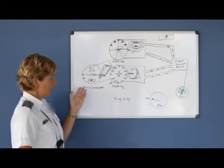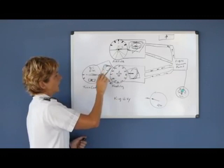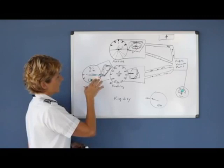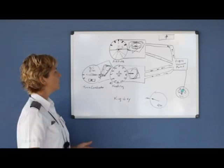Now the turn coordinator, it is also a gyro, that's how it works, but the gyro is mounted at a slight angle and it works off of the gyroscopic precession. It doesn't really need the rigidity as much to give us an accurate reading. The gyroscopic precession allows the turn coordinator to show us rate of turn or rate of roll.